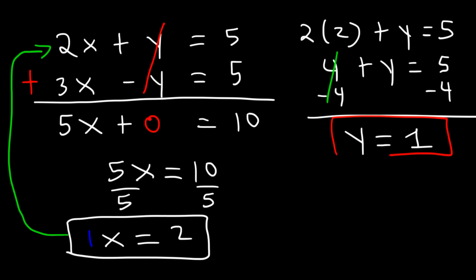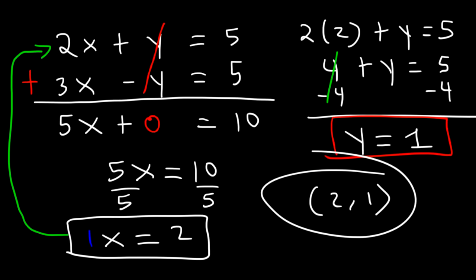So as an ordered pair, we can write the answer like this: (2, 1). x is 2, y is 1. Now let's work on another example.